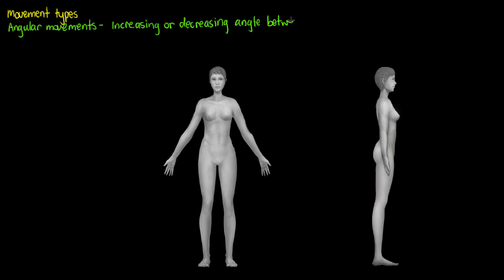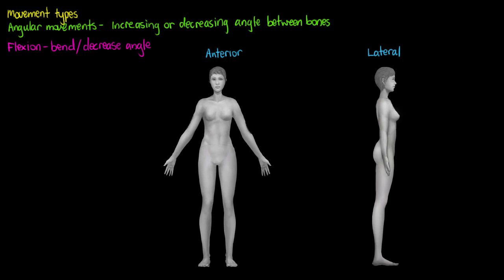We are increasing or decreasing the angle between bones. I'll put up on the screen a drawing in the anatomical position from an anterior view and also from a lateral view. Our first angular movement is called flexion. Flexion is when you are bending or decreasing the angle between joints. So if we have our arm out straight in the anatomical position and we bend our elbow forwards as if we were doing a bicep curl, we are decreasing the angle at our elbow — that's elbow flexion.